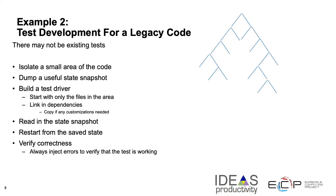The second example is how to develop tests for a legacy code — in this case from E3SM — where tests that may have been developed when the code was being developed are no longer available. The only option available to users, even when dealing with just one component, was to run the whole model, which could take hours and needed to be submitted as a job to a queue. Clearly this was not a great state to be in — it was very wasteful of people's time.